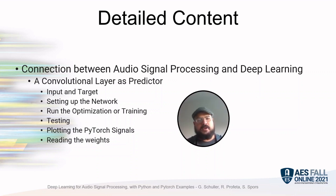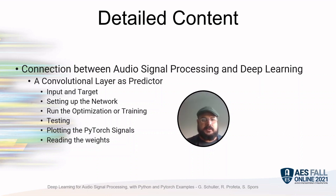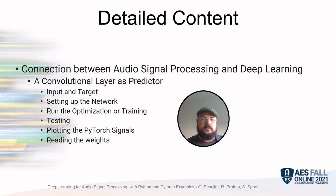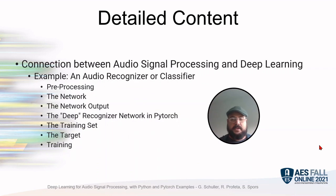We then continue exploring the connection between audio signal processing and deep learning, now talking about the convolutional layer as a predictor. We'll cover the input and target, setting up the network, running the optimization and training, testing the network, and how to plot PyTorch signals and read the weights of our model.